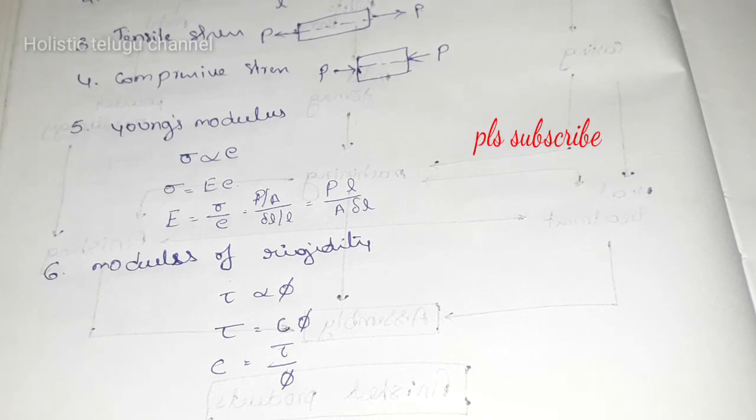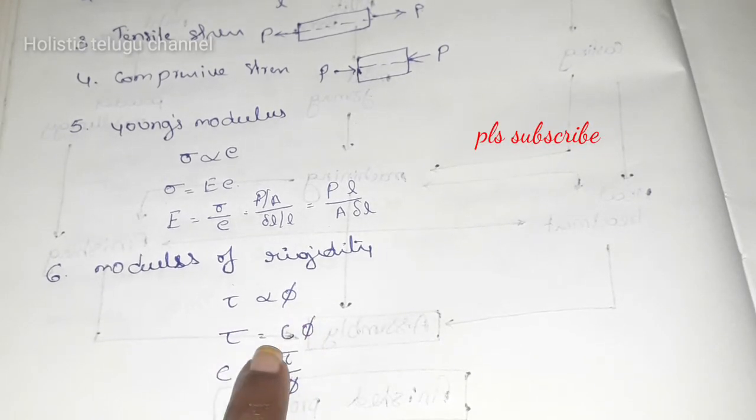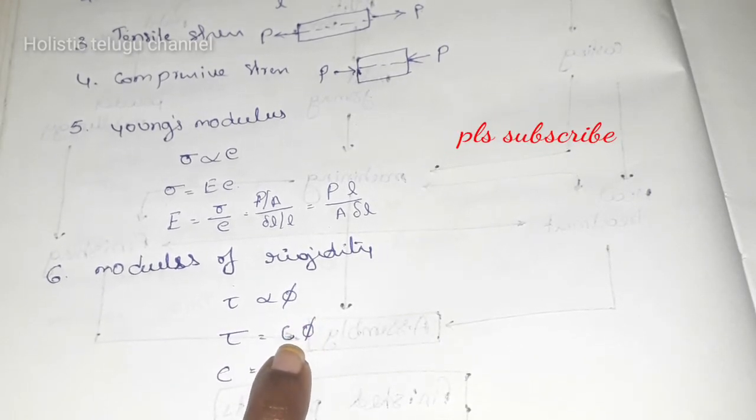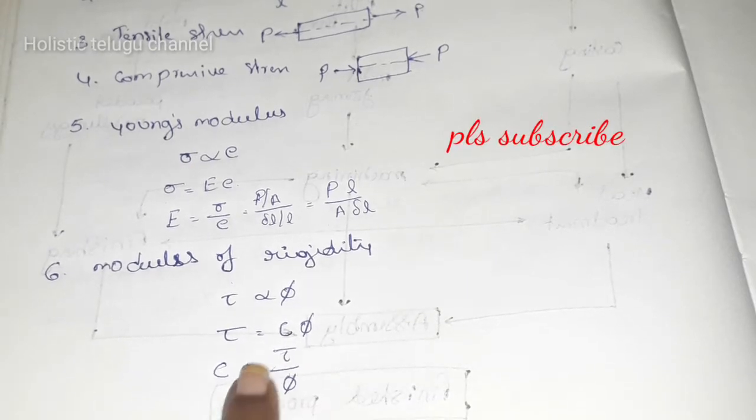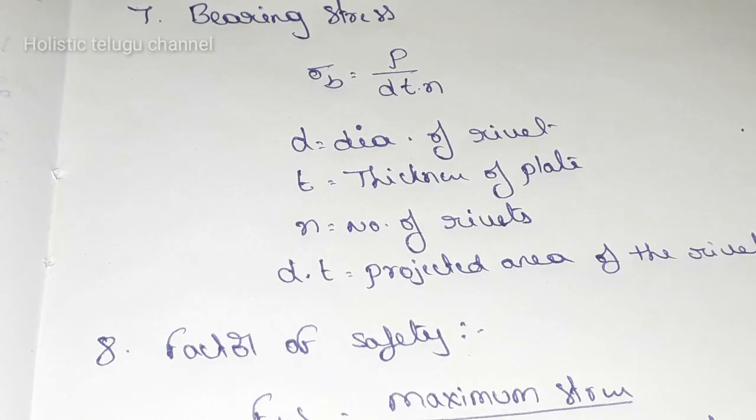Next, modulus of rigidity. The shear stress is directly proportional to shear strain. It is denoted by tau proportional to phi. So tau equals constant capital C into phi. C equals tau by phi.